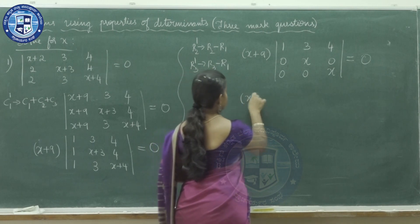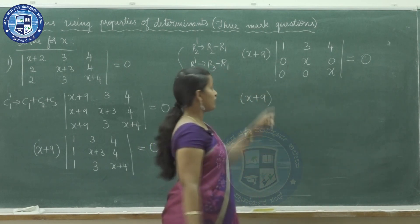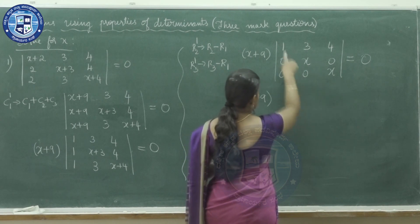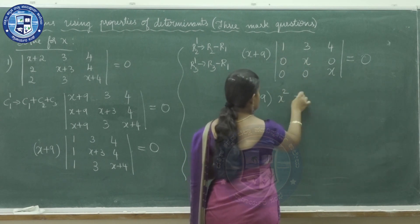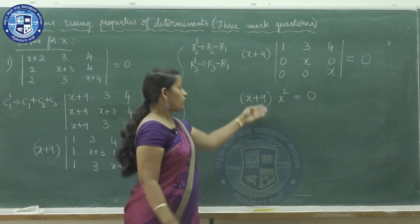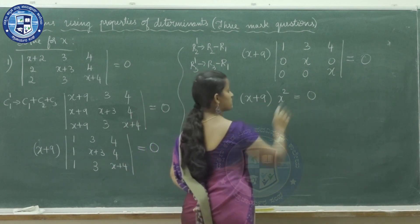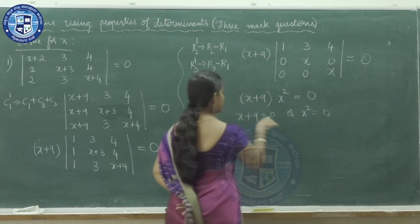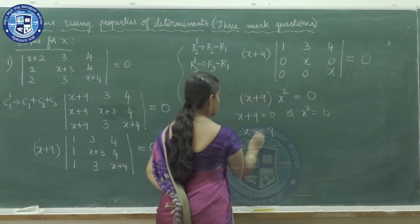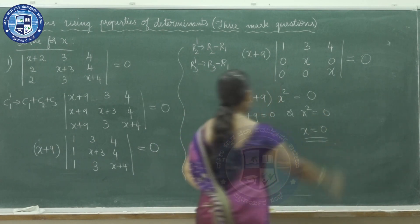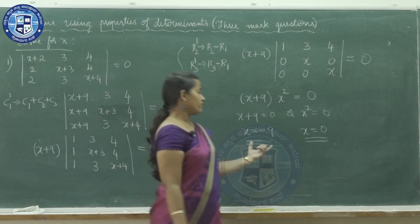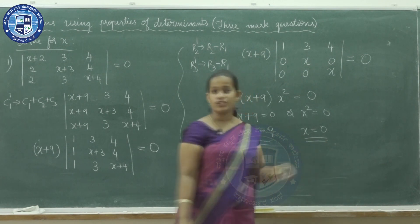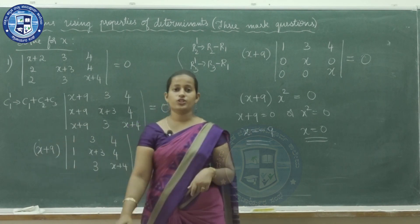Now look at this determinant. We have three zeros here, so the determinant equals the product of the principal diagonal elements: 1 × x × x = x². So we have (x+9) × x² = 0. The product of two numbers is 0 implies either x+9=0, giving x = −9, or x²=0, giving x = 0. So the values of x are −9 and 0.